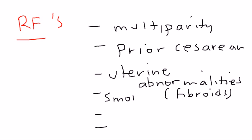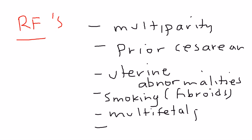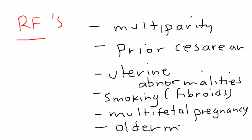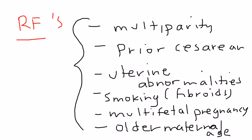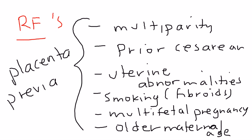Smoking, interestingly, is a risk factor for developing placenta previa. A multifetal pregnancy — meaning more than one fetus, such as twins or triplets — is another risk factor. And advanced maternal age is also a risk factor. Remember these important risk factors; they will be tested on the licensing exam.